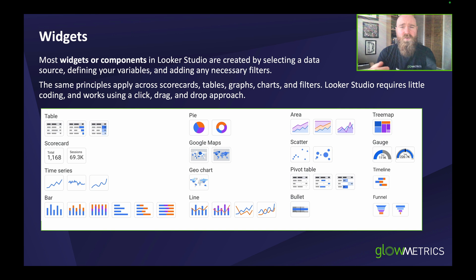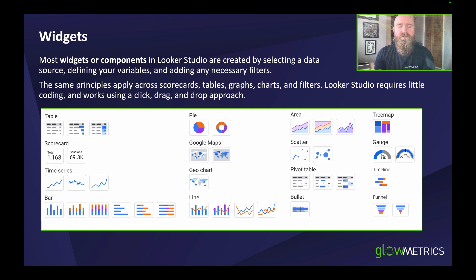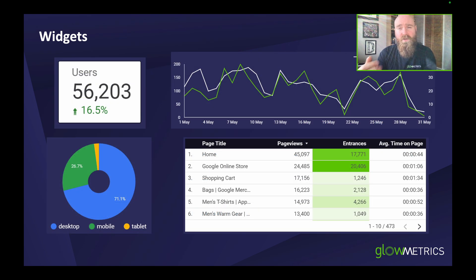Once we've got our data fields from our data source we can start to build widgets. A widget or component in Looker Studio is really just a visualization — whether that's a pie chart, a table, a graph, or a visualization of different fields and variables, maybe with some filters applied. For example, a pie chart showing device category and sessions or page views. All charts, even the more complex-looking ones, follow the exact same principles.